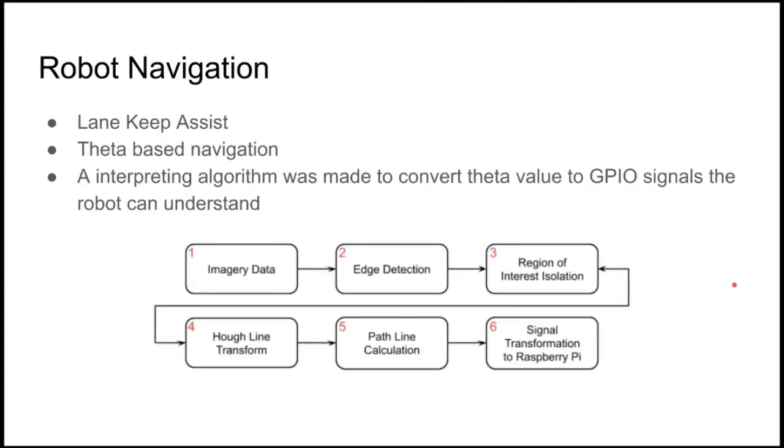Additionally, after we got the theta value, the robot navigation would then use, in the beginning we used lane keep assist. So we had tape on the floors and the robot would need to follow the tape to get to the target. That was the first method of navigating that we have done. The robot for that used three different algorithms that I'll actually explore in the next slide.